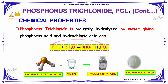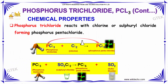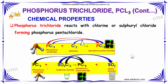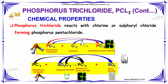Talking about the chemical properties, phosphorus trichloride is violently hydrolyzed by water, giving phosphorous acid and hydrochloric acid. Phosphorus trichloride also reacts with chlorine to form phosphorus pentachloride. It can also react with sulphuryl chloride — PCl₃ mixed with SO₂Cl₂ gives phosphorus pentachloride and sulphur dioxide. Sulphur dioxide is used for preparing sulphuric acid.